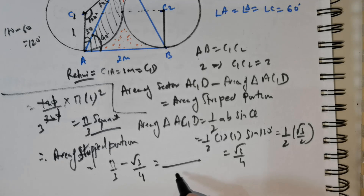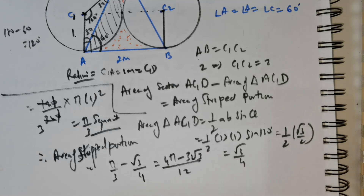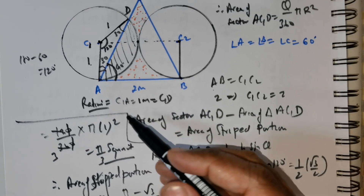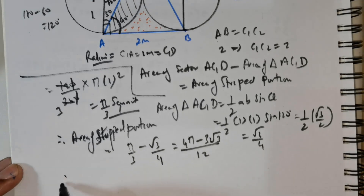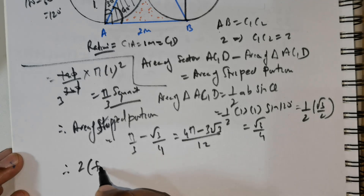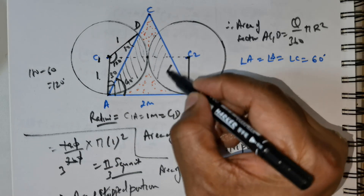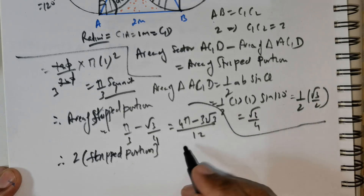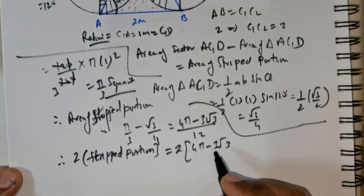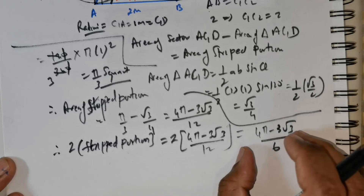Simplifying: with denominator 12, this is 4 pi minus 3 times root 3, all divided by 12. This is for one striped portion. But we need to take it for 2 portions. So for 2 striped portions, we multiply by 2: 2 times (4 pi minus 3 root 3) over 12, which equals 4 pi minus 3 root 3, divided by 6. So this is for 2 portions of the striped area.